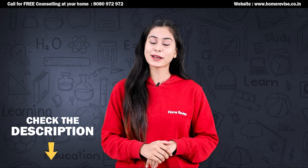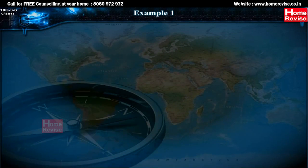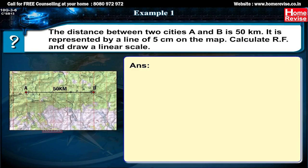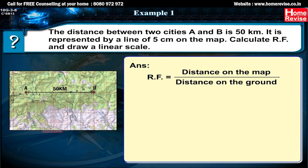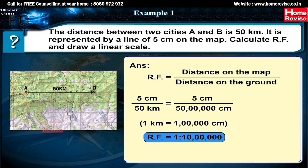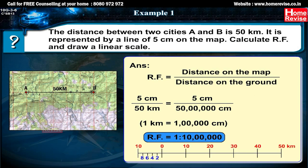Example 1: The distance between two cities A and B is 50 km, represented by a line of 5 cm on the map. Calculate the RF and draw a linear scale. Answer: RF = distance on the map / distance on the ground = 5 cm / 50 km = 5 cm / 50,00,000 cm (since 1 km = 1,00,000 cm). Therefore, RF = 1 : 10,00,000.